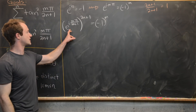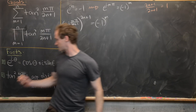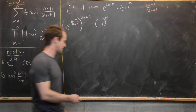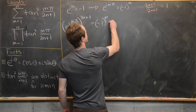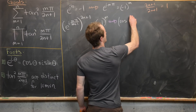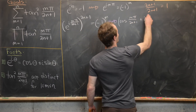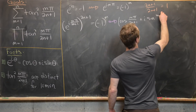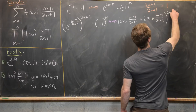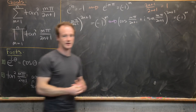Now I rewrite the inside using Euler's formula with theta equal to m pi over 2n plus 1. That gives us cosine of m pi over 2n plus 1 plus i sine of m pi over 2n plus 1, all raised to the 2n plus 1 power, equals minus 1 to the m.